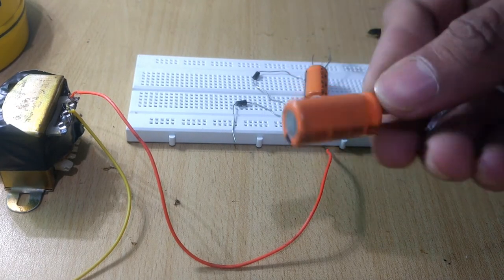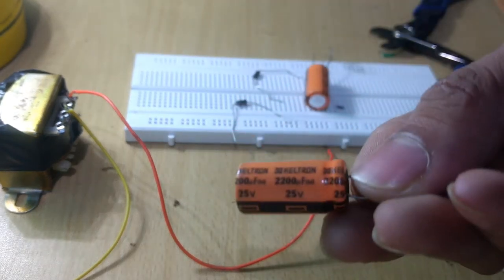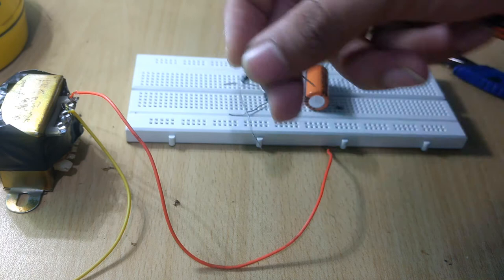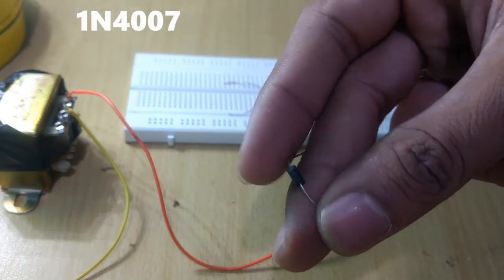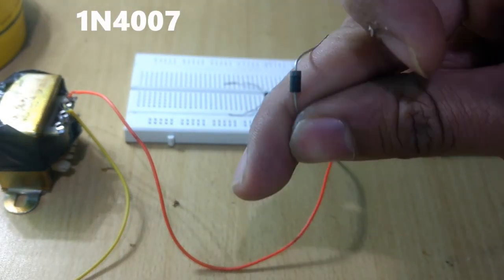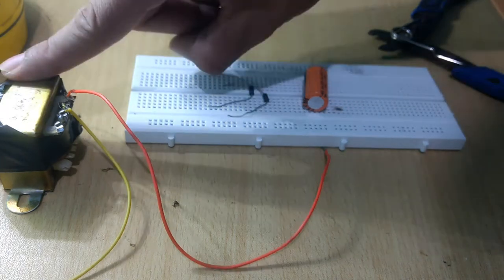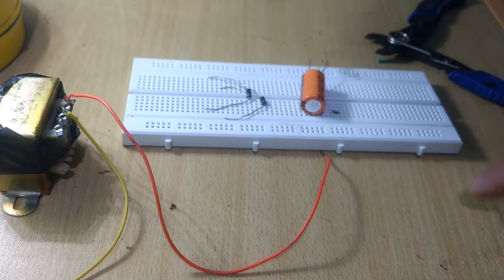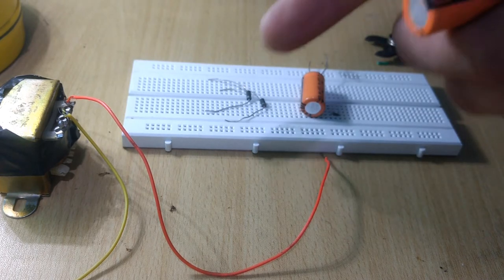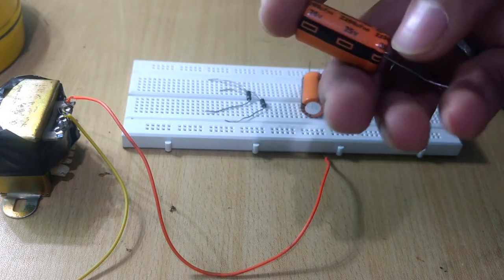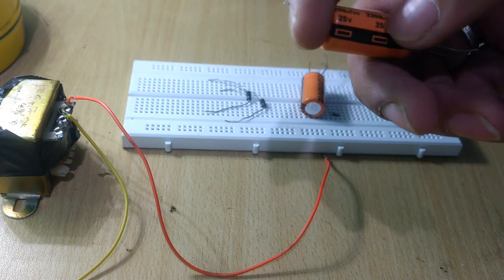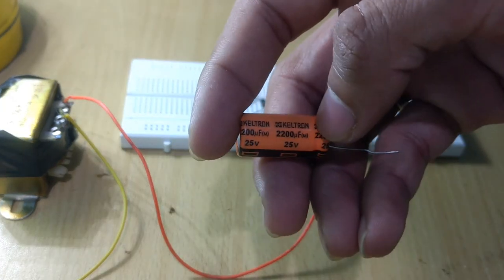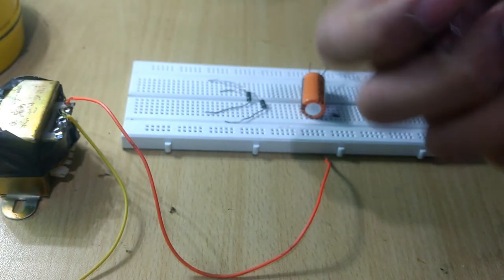To make a full wave voltage doubler, we will be needing two capacitors, electrolytic type, two diodes, here it is 1N4007, and a step-down transformer. It is a 6-0-6. You can use the transformer of your choice, but keep in mind that the output voltage after doubling must not go above 25 volts or the rated voltage of the capacitor. This may explode the capacitor.